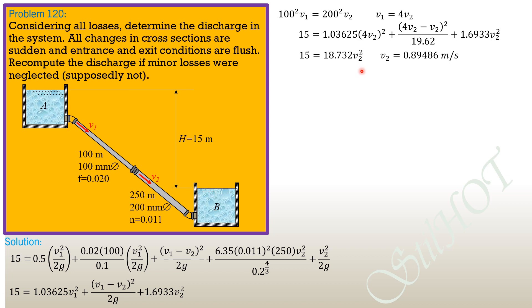Finally, we can compute the discharge. This is mean velocity of flow in pipe 2, so we use area of pipe 2. So Q equals pi over 4 times 0.2 square times 0.89486 times 1000 to express the discharge in liters per second. So the discharge is equal to 28.11 liters per second.